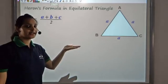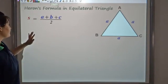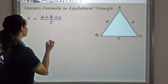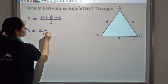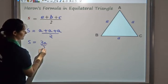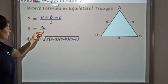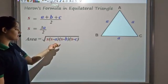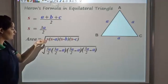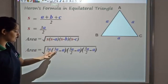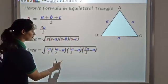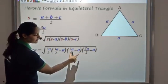Now if I use Heron's formula for an equilateral triangle, I get a really nice form. For an equilateral triangle all sides are equal to A, so S = (A + A + A) / 2 = 3A / 2. Now substituting into the area formula: area = √(S · (S−A) · (S−B) · (S−C)) = √((3A/2) · (3A/2 − A) · (3A/2 − A) · (3A/2 − A)). Since 3A/2 − A = A/2, this becomes √((3A/2) · (A/2) · (A/2) · (A/2)).